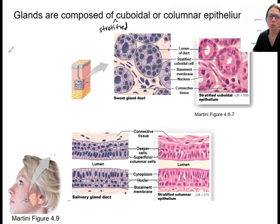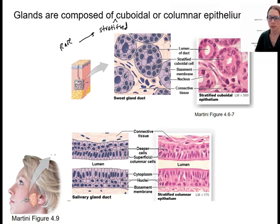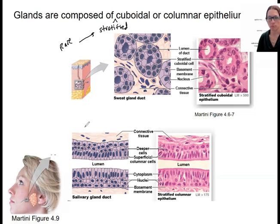It is the rare case where we have this type of tissue. Sweat glands are multiple layers — stratified cuboidal epithelium — and salivary glands are multiple layers — stratified columnar epithelium. You saw this before with tissue types.